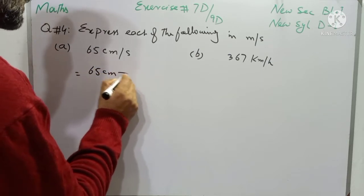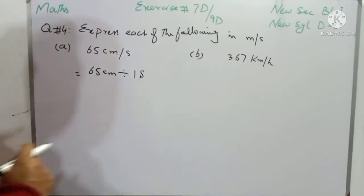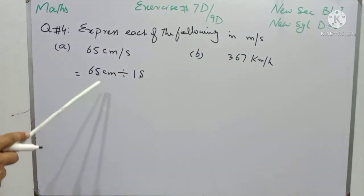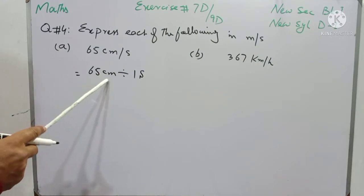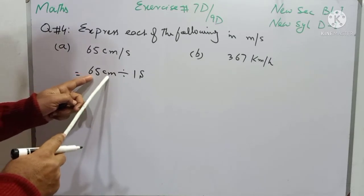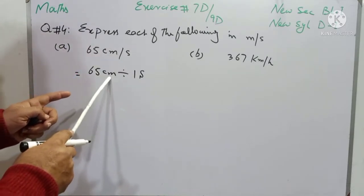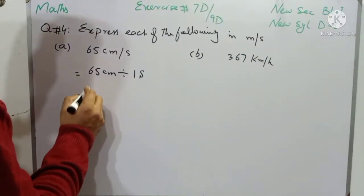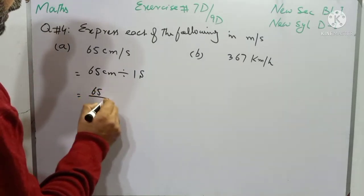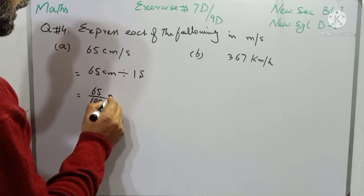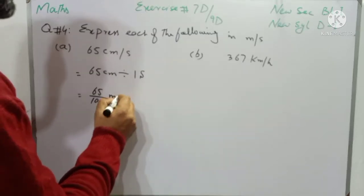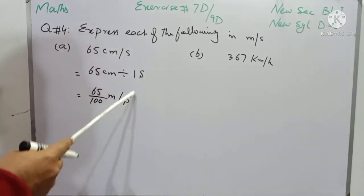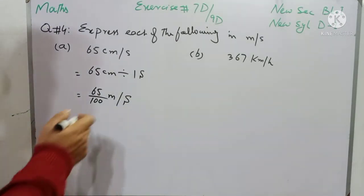65 centimeter divided by 1 second. We have to convert these centimeters into meters. You know that if there are 100 centimeters, then it will make 1 meter. So we will divide 65 by 100 to convert centimeter into meter, written as 65 over 100. Centimeters are converted into meters, divided by 1 second — per second — and it is already in per second, so we write it as per second.